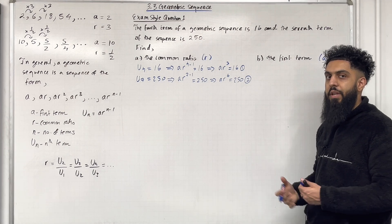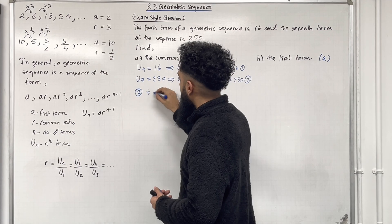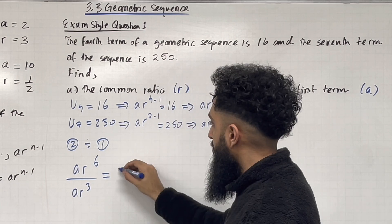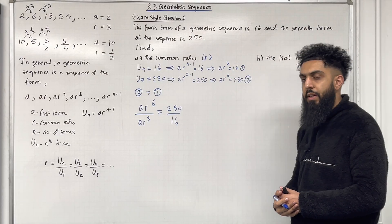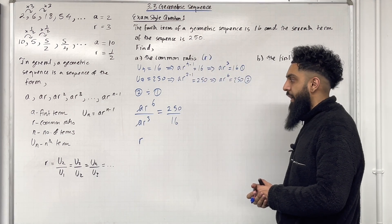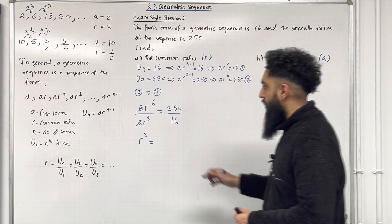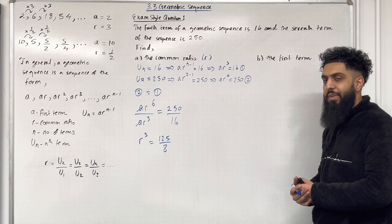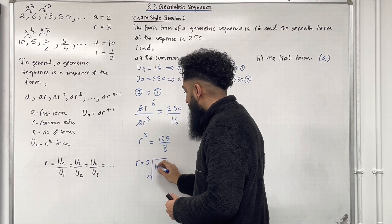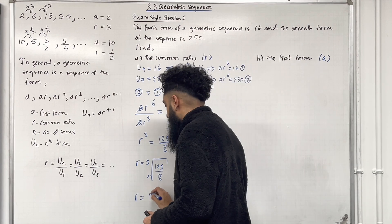To find the common ratio R, we take equation 2 divided by equation 1 to eliminate A. So AR⁶ divided by AR³ equals 250 divided by 16. The A's cancel, and the new power of R is 6 minus 3 = 3. So R³ = 250/16, which simplifies to 125/8. Taking the cube root, R = ∛(125/8) = 5/2.